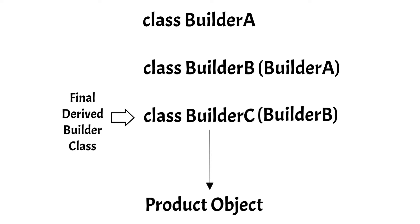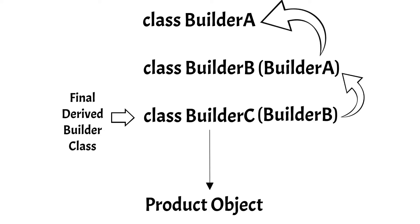Why is it so? Because in multi-level inheritance, the last and final derived class will have access to all the properties and members of all its parent classes. Which means that Builder C will have access to all the methods of Builder B and also Builder A, because both of these classes are the parent classes of Builder C. So this is the concept that we are going to use.